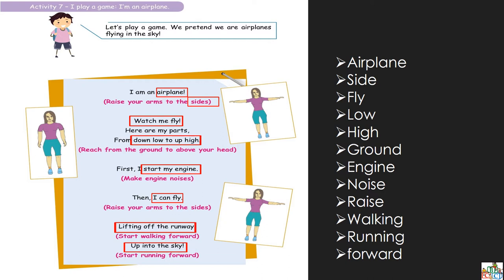Maintenant regardez — j'ai quelques mots que j'ai écrits next to the page. You're going to write these words five times each. It's very important to learn words, to read and to spell. What do we have? We have: airplane, side, fly, high, low, ground, engine, noise, raised — qui veut dire monter — walking — marcher — running, and forward — forward veut dire aller devant.